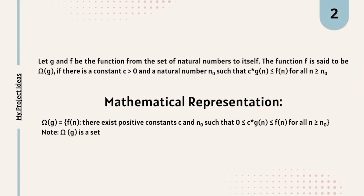Coming to the mathematical representation of Omega notation, let's look at what the function says. Let G and F be functions from the set of natural numbers to itself. The function F is said to be Omega of G if there is a constant C greater than 0 and a natural number N0 such that C times G of N is less than or equal to F of N for all N. I know it's a bit tough, but no worries — let's simplify it.